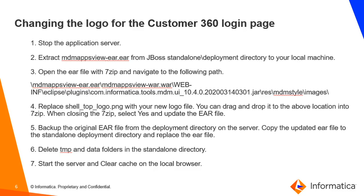Backup the original EAR file from the deployments directory on the server. Copy the updated EAR file to the standalone deployments directory and replace the EAR file. Delete the temp and data folders in the standalone directory. Start the application server, clear the cache on the local browser, and test it.